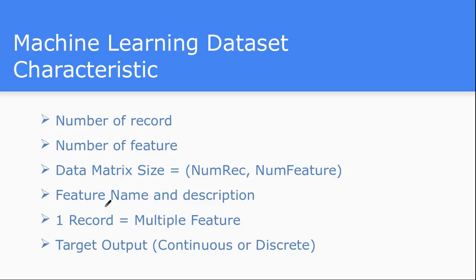You should know about the feature name, individual feature names, and their descriptions — how that feature is actually contributing to compute the output value. If you know the in-depth description of a feature, you can even ignore that feature based on your requirement, or give more or less weightage to individual features. One record equals multiple features, and there is one target output — for each record, what should be the possible output. This output can be continuous, like in regression where any real number is possible, or discrete, like in a classification problem.